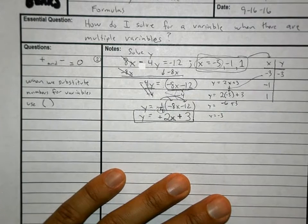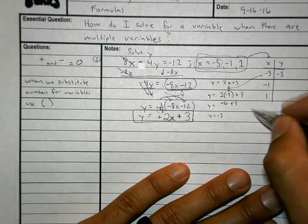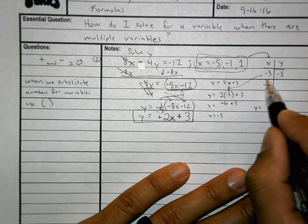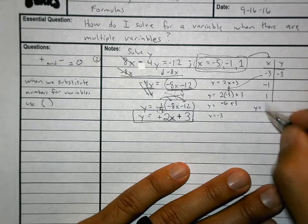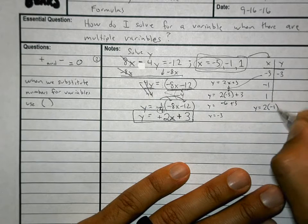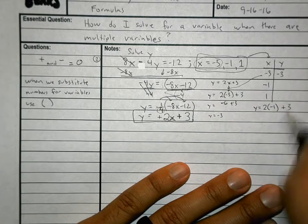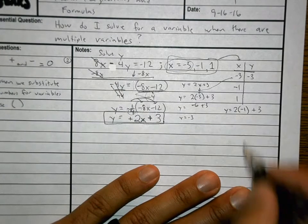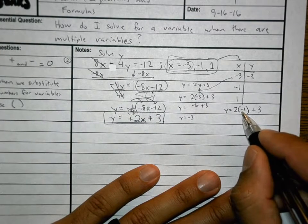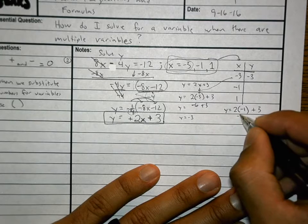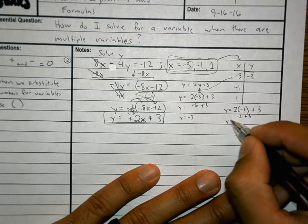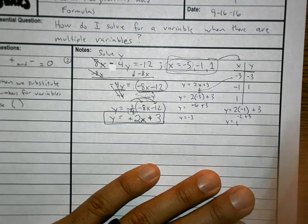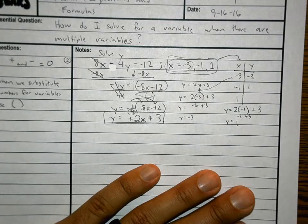This is how we do it by hand. I'll do one more a little quicker. y equals — instead of x, what am I going to plug in? Negative 1 — use parentheses: 2 times negative 1, plus 3. 2 times negative 1 is negative 2, plus 3, and y is going to equal 1.